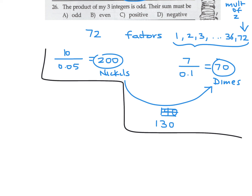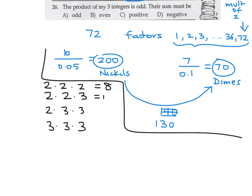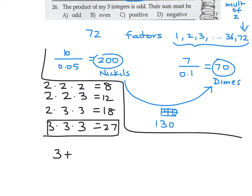The product of three integers is odd — the sum must be what? Try combinations: even-even-even gives 8, even-even-odd gives 12, even-odd-odd gives 18, odd-odd-odd gives 27. The only case where the product is odd is odd-odd-odd. Adding three odd numbers: for example 1+3+5 equals 9, which is odd. Number 26, the answer is A.